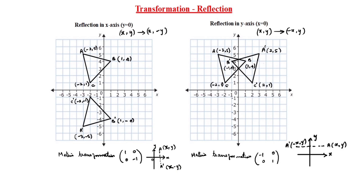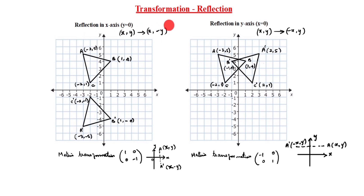We will see five types of reflection. This is the first one: reflection in the x-axis, y is equal to zero. This is the given image, and this is the reflected image. If the given image is x comma y, then the reflected image is x comma minus y.